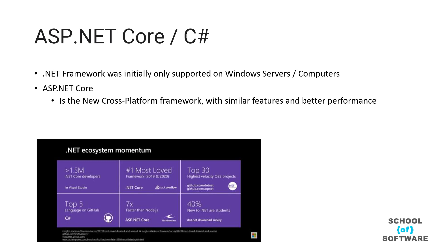Besides cross-platform support, another complaint companies had with .NET was performance. Yes, it has a lot of things built in, but it was a slow framework. Web applications were easier to develop and deploy, but performance was pretty slow, which is also why a lot of companies did not want to go with .NET. But again, the whole thing changed with .NET Core. With the rebuild of the framework, they focused heavily on performance, and now we have really high-performing systems being built on .NET Core.